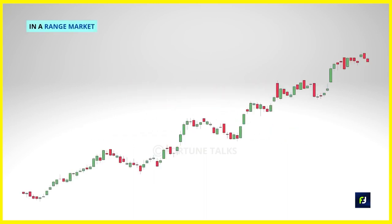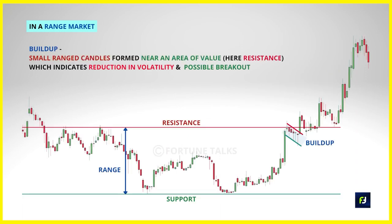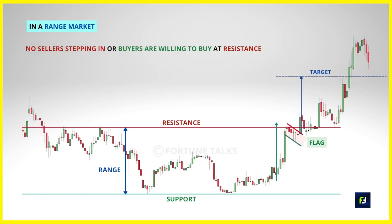Bull flags can also form when the market is in a range at a resistance level — this is the concept of breakouts with buildup near a resistance or support level. A buildup near resistance happens because there are no sellers stepping in or buyers are willing to buy at higher prices; this is a sign of strength and the market could break out higher. To identify this: find a market in range, wait for a flag pattern to form near resistance in the form of a buildup, then trade the break above the buildup or wait for the market to close above the resistance level. Entry, stop loss, and target criteria remain the same.